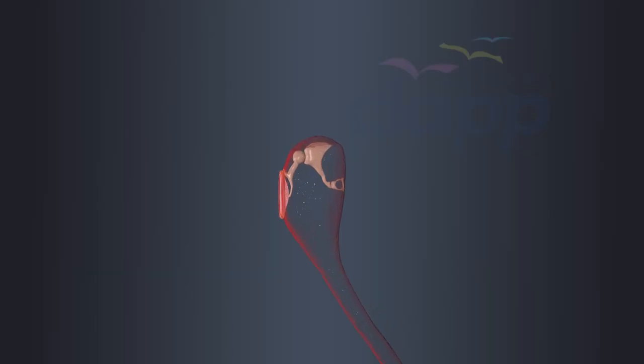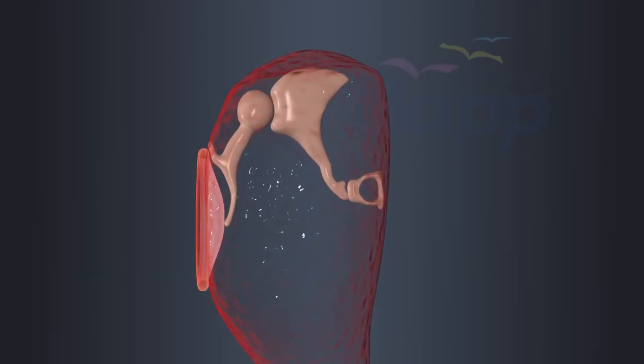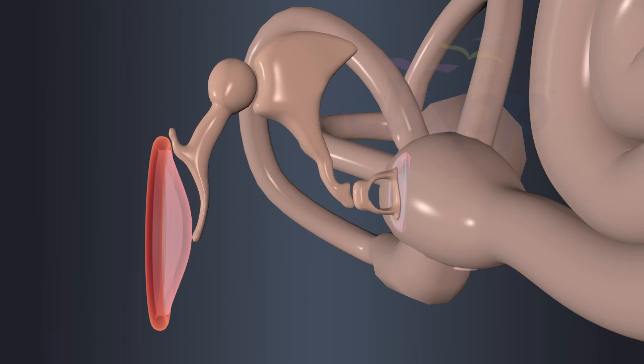It is a crucial part of the auditory system and plays a vital role in transmitting sound vibrations from the eardrum to the inner ear, where sound is converted into electrical signals that the brain can interpret.